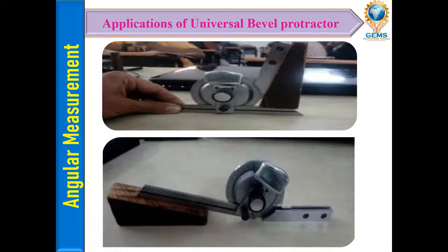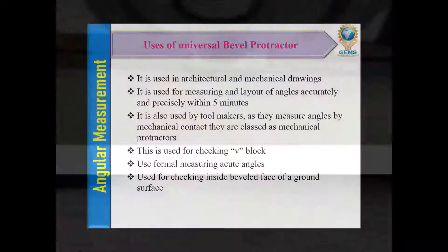Another application is its use with a sine bar — the work piece is set up with the sine bar and the universal bevel protractor is used to verify or measure angles in that configuration.